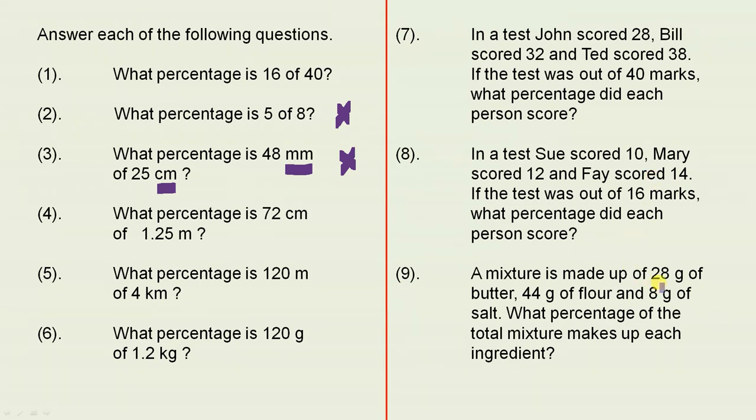Over here, we have a mixture. Now it's sort of pretend you're cooking something or you're making something, and you've got those three ingredients. We have to work out what percentage each of those ingredients is of the total. So make sure you add those three numbers up. That gives you the total. Then you can work out each part as a percentage.